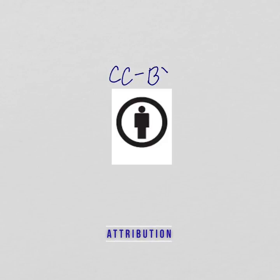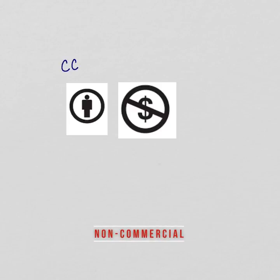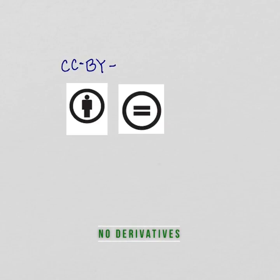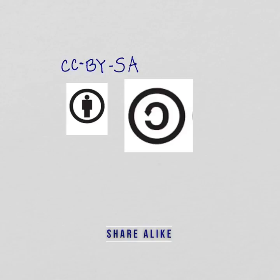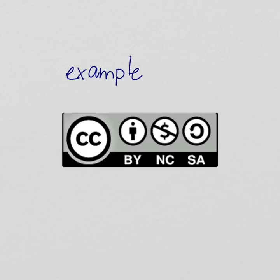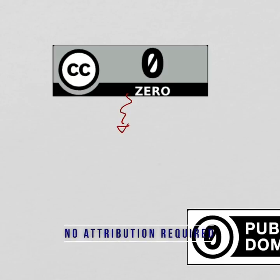Here are some common Creative Commons licenses. CC BY means that you're allowing people to use your materials as long as they acknowledge you, the creator. If you add NC or non-commercial, you're telling them not to sell your work. If you add ND or no derivatives, you are allowing them to use your work but not make any changes to it. If you add SA or share alike, you're allowing them to use and distribute your work, but they must distribute it in the same way you released it. So if you released it as CC BY NCSA, they should also release it as CC BY NCSA. There's also CC0, which means that anyone can use your work without even acknowledging you as the creator.